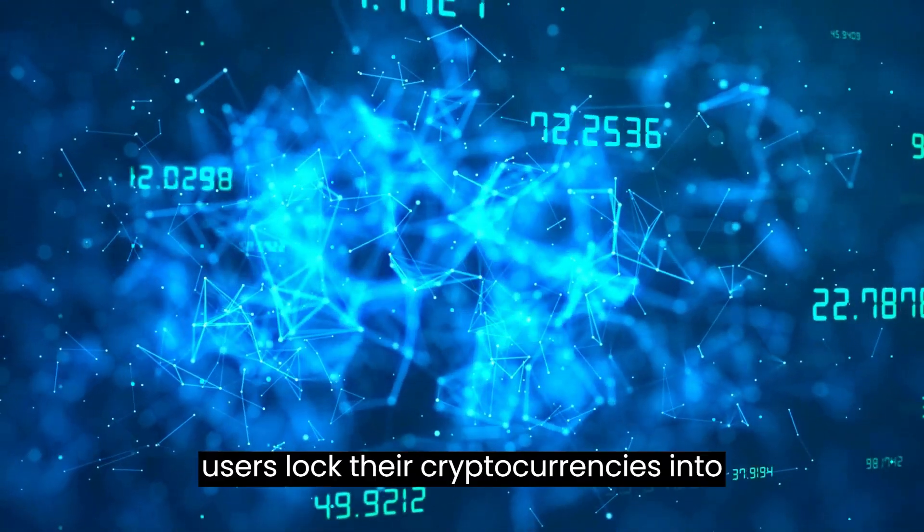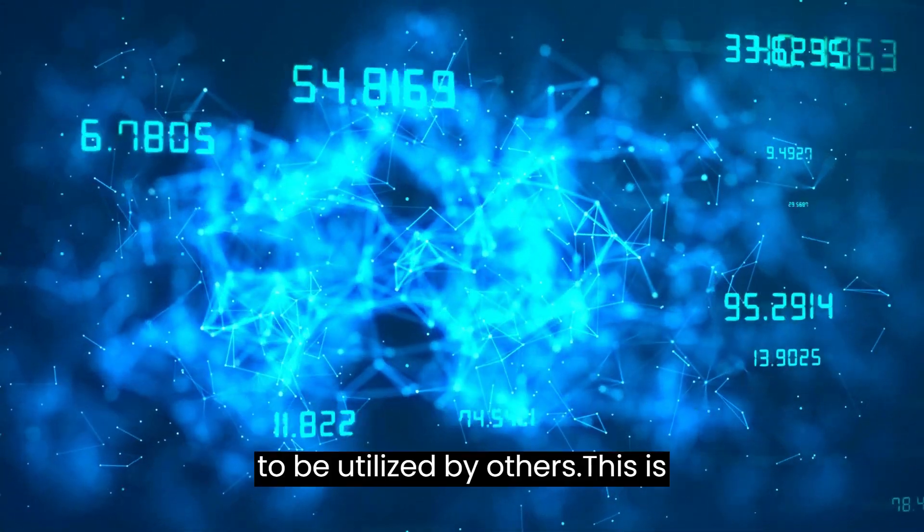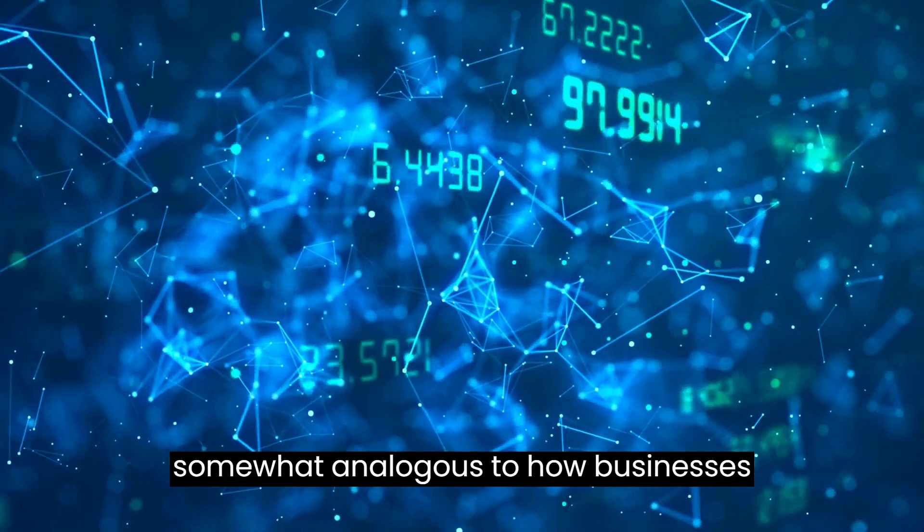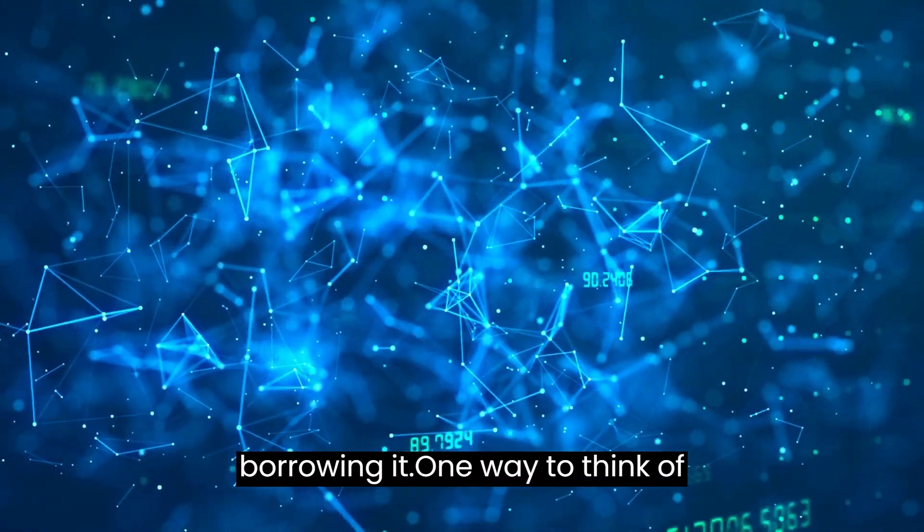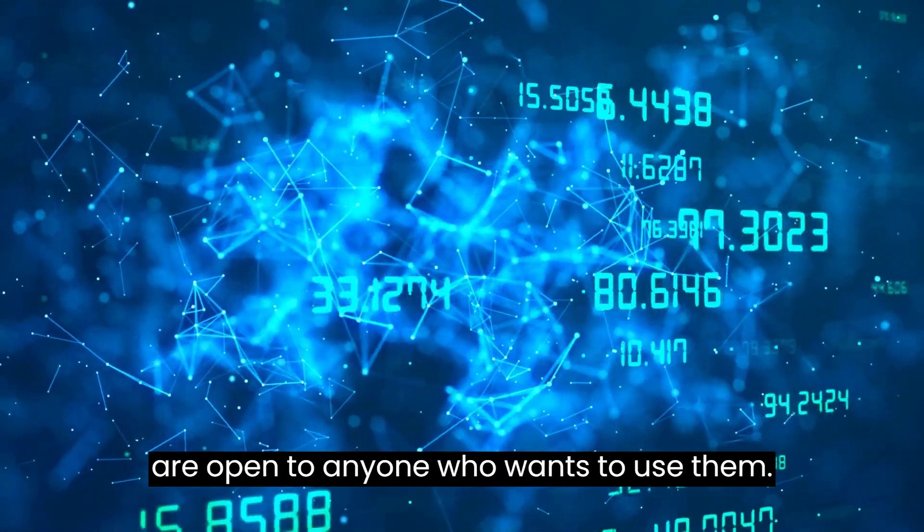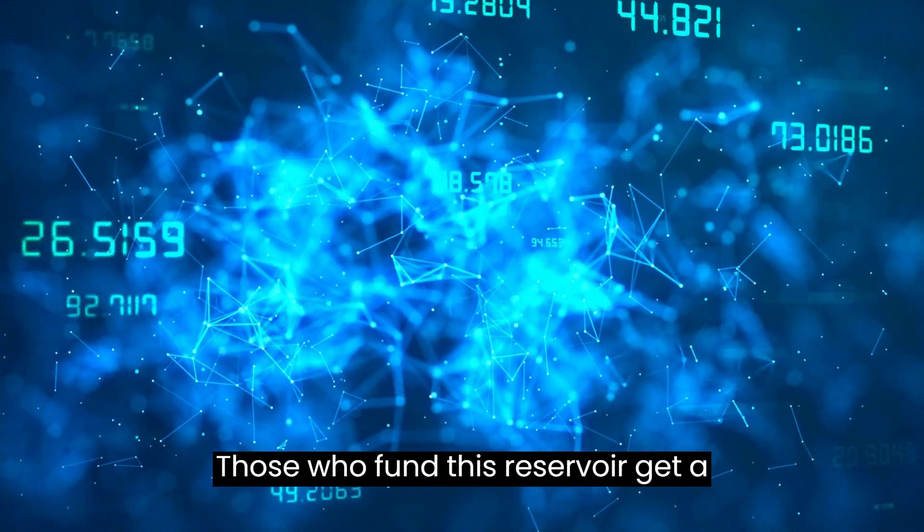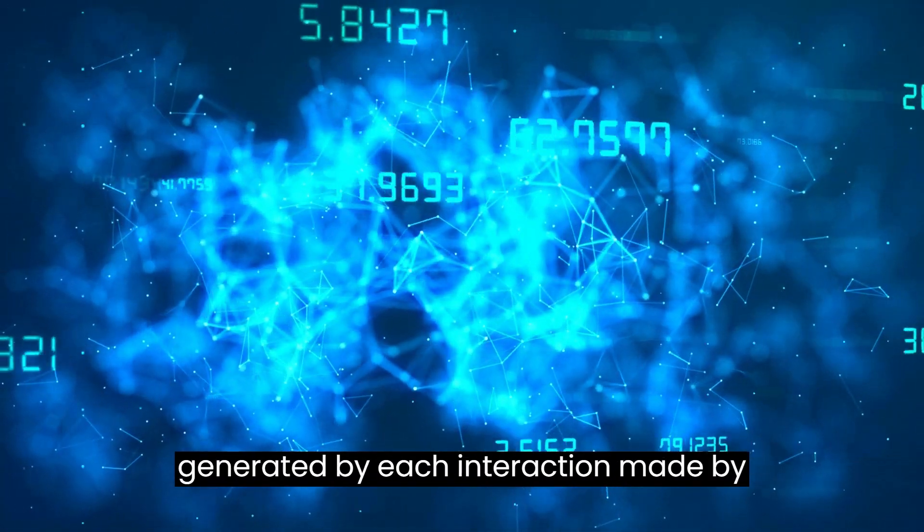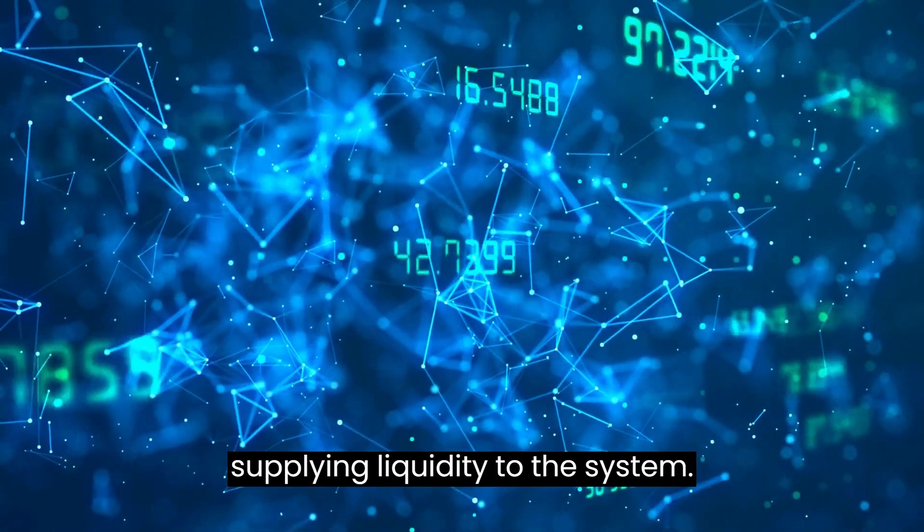They are generated when users lock their cryptocurrencies into smart contracts, which then enable them to be utilized by others. This is somewhat analogous to how businesses change money into debt or equity by borrowing it. One way to think of liquidity pools is as crowdfunded storage areas for cryptocurrencies that are open to anyone who wants to use them. Those who fund this reservoir get a percentage of the transaction fees generated by each interaction made by users. This is their reward for supplying liquidity to the system.